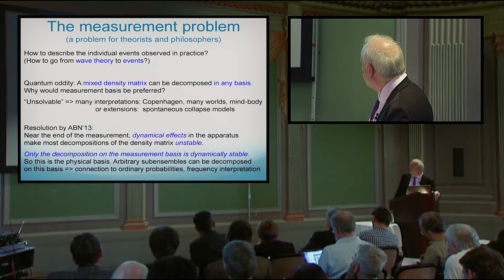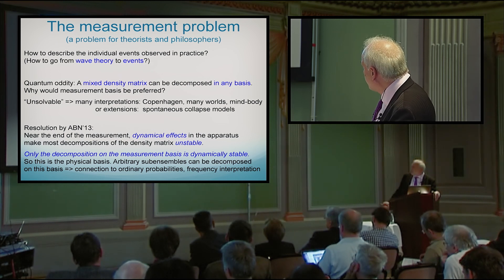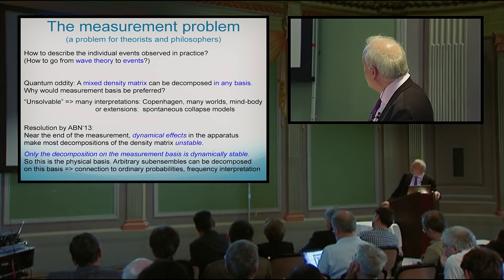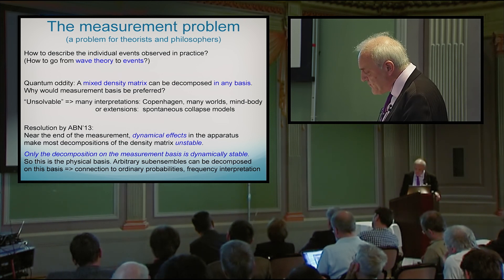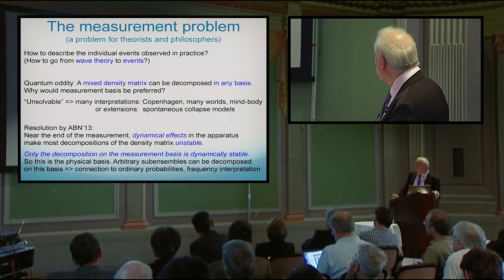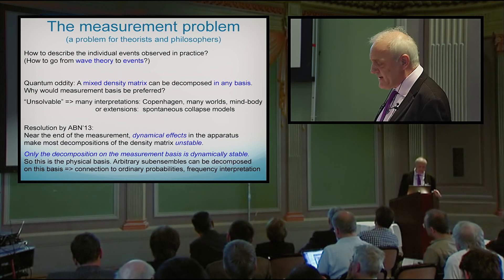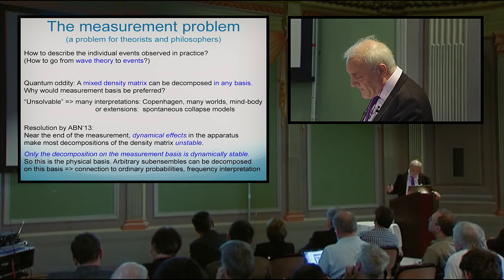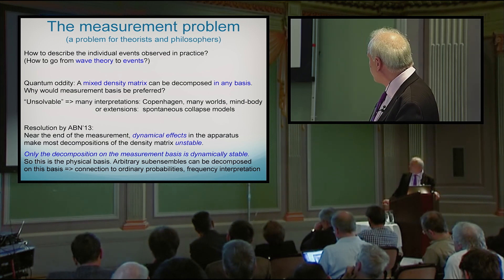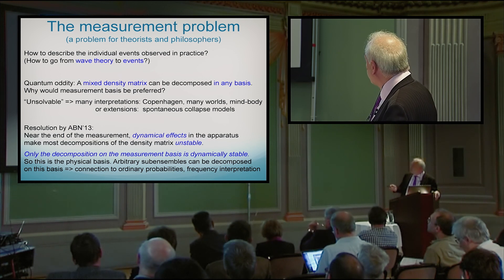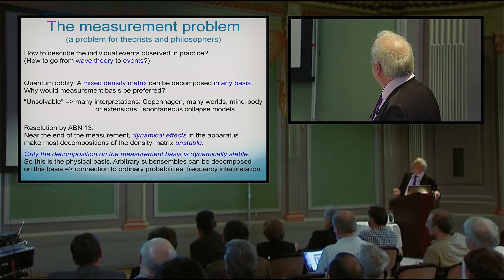You can consider sub-ensembles and decompose them on that basis. If you measure a spin, you have just two outcomes, so this basis has just two possibilities — much less than the infinity you have otherwise. For that reason you can make a connection to ordinary probabilities and even to the frequency interpretation of probabilities. Experimentalists are doing exactly this: they do frequency interpretation, counting how many times they get each result. Out of this statistical analysis comes exactly what is standard in experimental practice. We are working on a follow-up paper to clarify this even better.